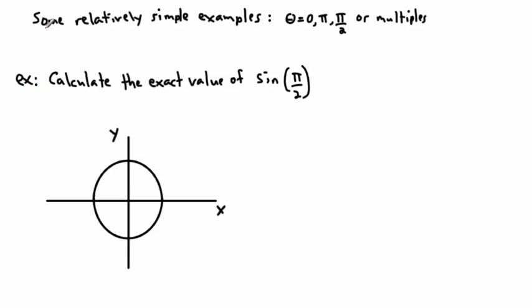Let's do some relatively simple examples. If theta is zero, pi, pi over two, or multiples of those, we can actually figure out exact values. So let's find the exact value of sine of pi over two.